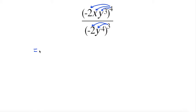So what this will look like is we are going to have negative 2 to the exponent of 4, x to the exponent of 4, and y cubed to the exponent of 4.